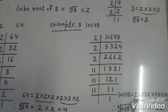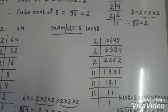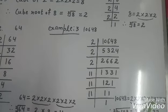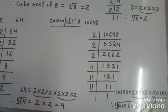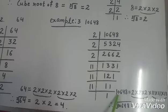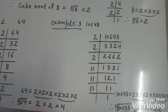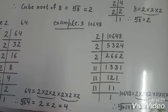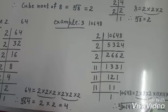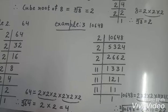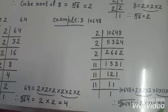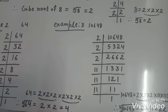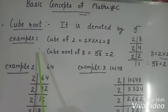So first of all group the triplet 2, 2, 2 is first triplet. 11, 11, 11 because 11 is repeated 3 times. So this is other triplet. For the cube root of 10648 we take 2 from first triplet and 11 from other triplet and multiply both these numbers we have 22 which is cube root of 10648.